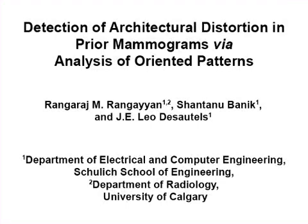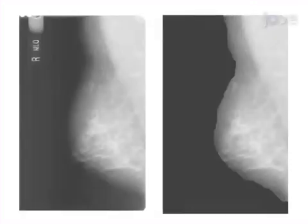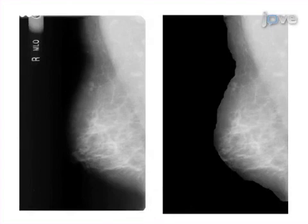The overall goal of this procedure is to detect subtle signs of breast cancer, in particular architectural distortion, in mammograms. This is accomplished by first pre-processing a given mammogram to detect the breast portion and remove artifacts in the given mammographic image.